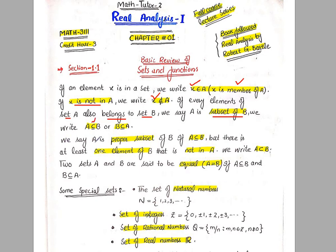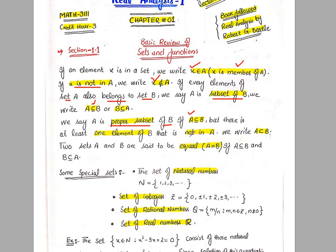Next, we say A is a proper subset of B. If we say A is a proper subset of B, it means: first, A must be a subset of B, but there is at least one element of B that is not in A. Then we say A is a proper subset of B, and we write A ⊂ B. This is the symbol of proper subset.